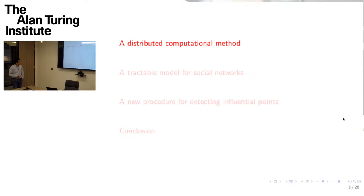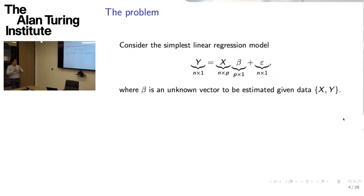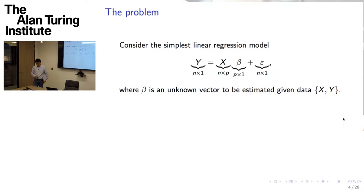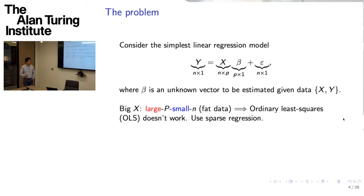I'm going to start by talking about a distributed computational method by looking at the linear regression model, where you want to relate a response variable to a high-dimensional feature vector. With n observations, I can write my model as y = Xβ + ε, where I only observe the data pair X and y. The interest is obviously to estimate β as accurately as possible. The number of columns in the X matrix is huge, so we can't do ordinary least squares — some kind of sparse regression, as Karola has talked about, can be helpful.